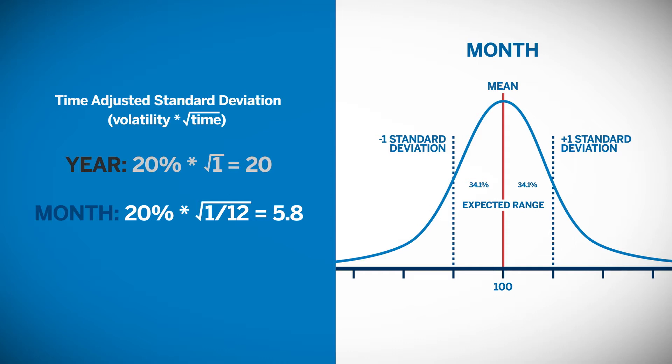The square root of 1/12th is 0.289. Therefore, the range from an initial price of 100 would be 94.2 to 105.8 in one month.